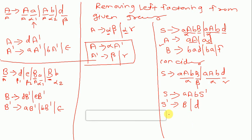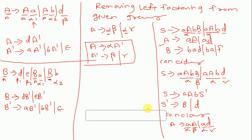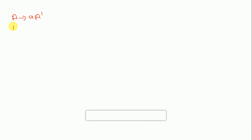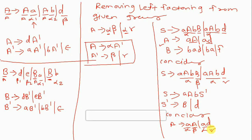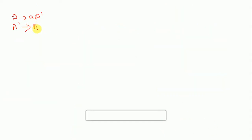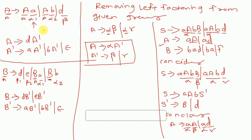For the sub-production A: A gives a a slash a d. Here 'a' is common — alpha is 'a', beta is capital A, gamma is small d. Applying the formula: A gives a A-dash, and A-dash gives capital A slash small d.